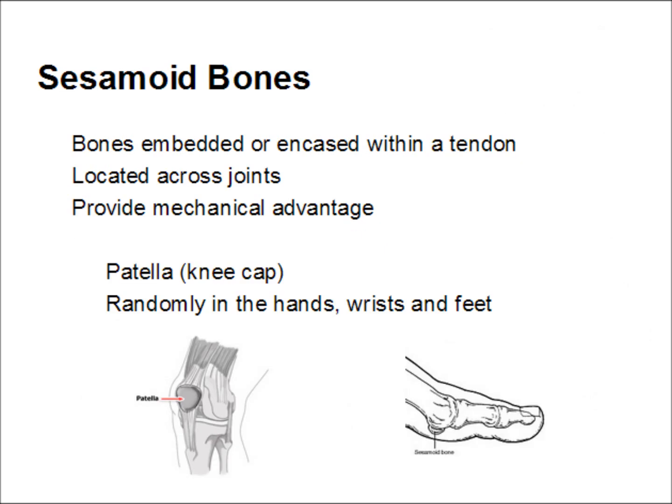Finally, we have sesamoid bones. Sesamoids are bones embedded within a tendon. They are located across joints and provide mechanical advantage. The patella, or kneecap, is a sesamoid. Additionally, most people have a variety of sesamoids in their wrists, ankles, and feet.